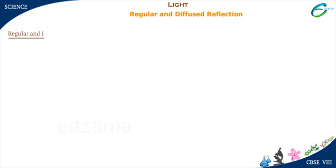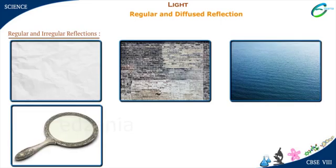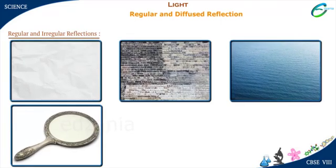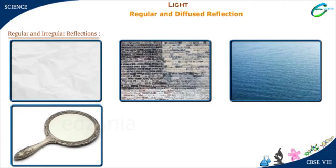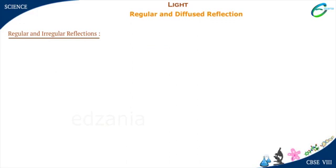Regular and irregular reflections. Take a look at the images appearing on the screen. Do you find any difference between the surfaces? Mirror and water are smooth surfaces, while wall and paper are rough surfaces. The image is formed by reflection from two different types of surfaces.